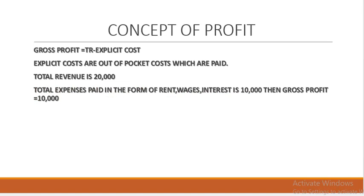Gross profit is equal to total revenue minus explicit cost. Explicit cost is the cost which is actually incurred on using other services and products. Explicit costs are out-of-pocket costs which are paid in reality and incurred in actual terms. For example, if total revenue is 20,000 and total expenses paid in the form of rent and interest is 10,000, then gross profit equals 20,000 minus 10,000.